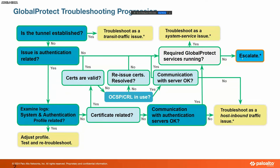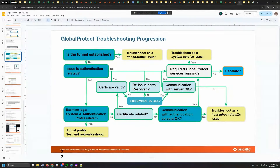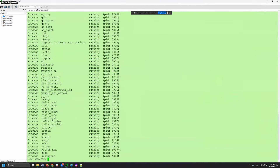When you notice that the GlobalProtect service is running, you can restart the service process using 'debug software start process' and pick up the process you're having issues with. If it's stopped, restart the process.